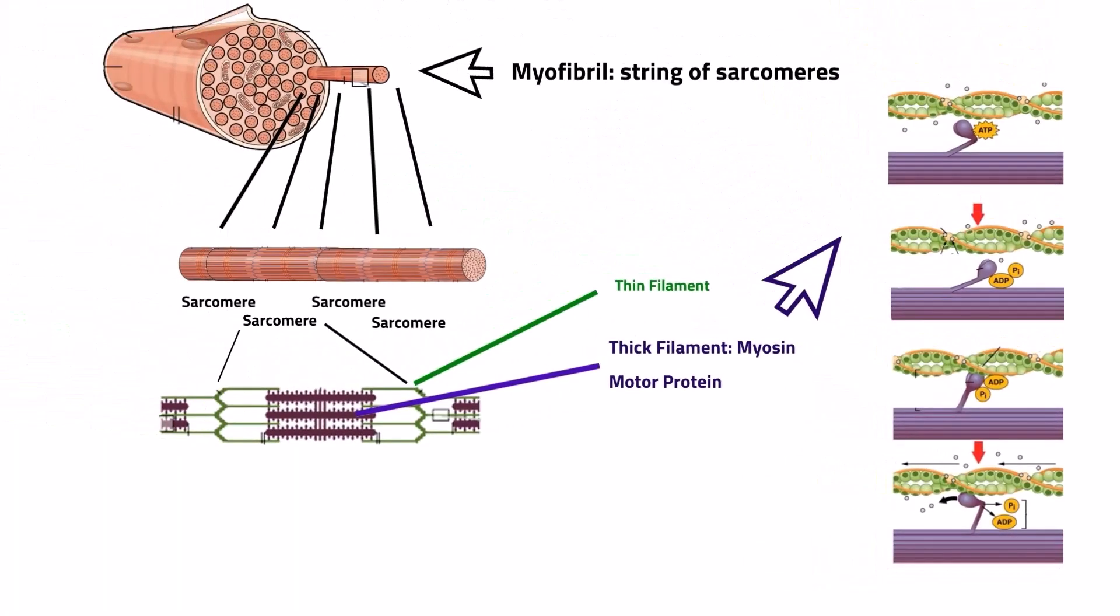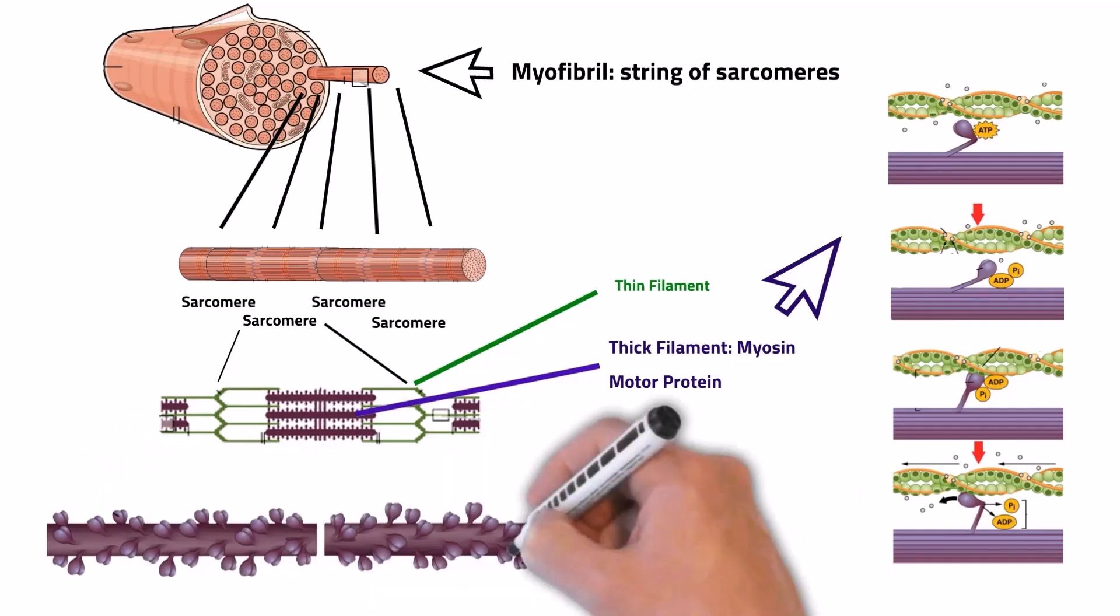So if we look at the thick filaments, they're organized so that the motor proteins on the right side of the sarcomere will move the thin filaments to the left. The motor proteins on the left side of the sarcomere move the thin filaments to the right.